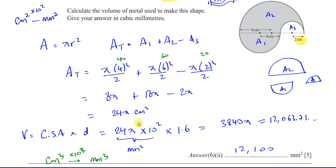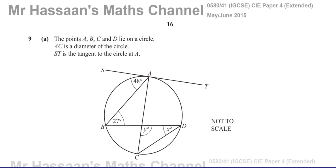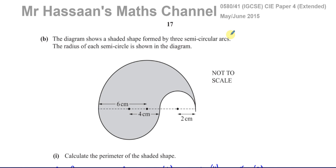So there's the answer to Question 9 Part B from the May-June 2015 Cambridge Paper 4 Variant 1. Other questions from this paper and from the topic of areas and volumes can be found in the playlists. You can subscribe to my channel by clicking the link, and the video appearing here will tell you how to use my channel efficiently. Thank you for watching and see you soon.